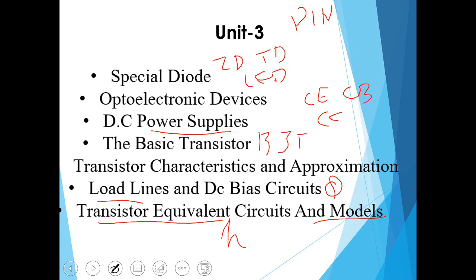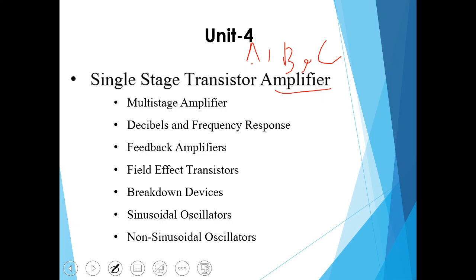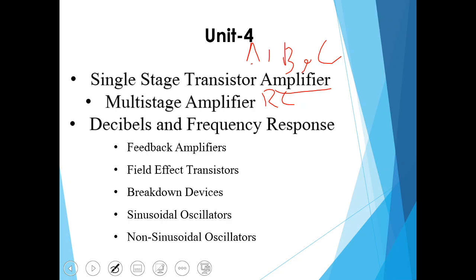In fourth unit, first chapter is single stage transistor amplifier where we'll study classification of amplifier, their characteristics, uses, comparison, class A, B, and class C amplifier. Second one is multistage amplifier where we'll study amplifier coupling, RC coupled, transformer coupled, direct coupled with the Darlington pair, and differential amplifier. Third one is decibels and frequency response where we'll study decimal system, its characteristics, variation in amplifier gain with frequency, gain bandwidth product.